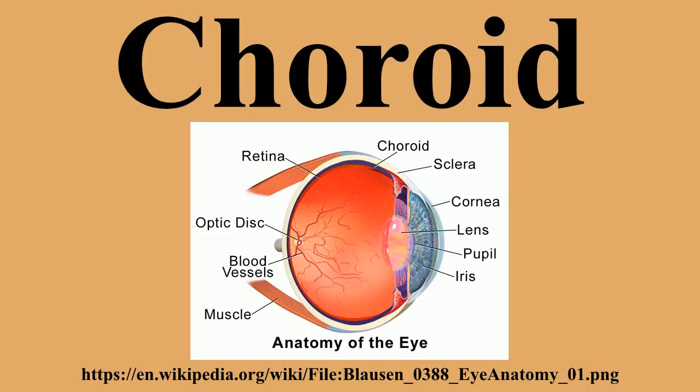Melanin, a dark colored pigment, helps the choroid limit uncontrolled reflection within the eye that would potentially result in the perception of confusing images. In humans and most other primates, melanin occurs throughout the choroid. In albino humans, melanin is frequently absent and vision is low. In many animals, however, the partial absence of melanin contributes to superior night vision.